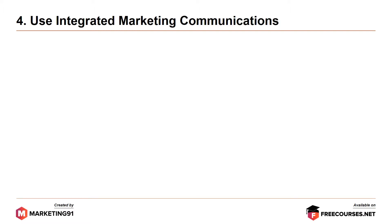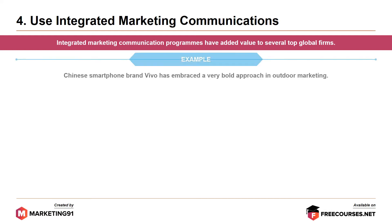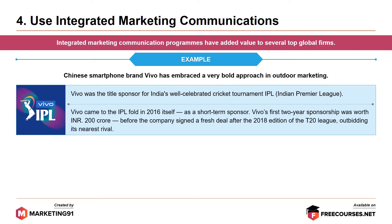Moving on to the fourth commandment: use integrated marketing communication. IMC programs have added value to several top global firms. Chinese smartphone brand Vivo has embraced a very bold approach in outdoor marketing. Vivo was the title sponsor for India's well-celebrated cricket tournament, the Indian Premier League. Vivo came to the IPL fold in 2016 as a short-term sponsor, and its first two-year sponsorship was worth 1,200 crores before the company signed a fresh deal after the 2018 edition of the T20 league, outbidding its nearest rival.